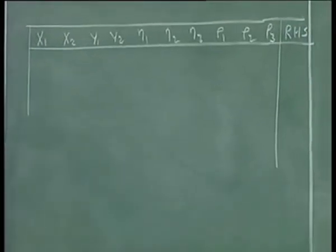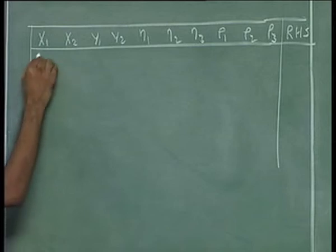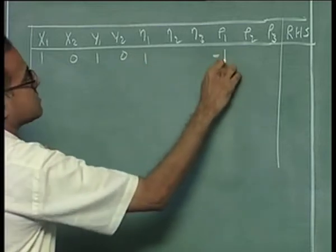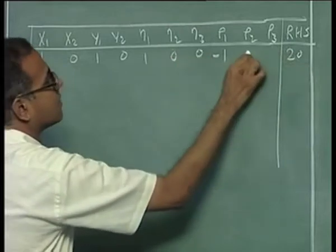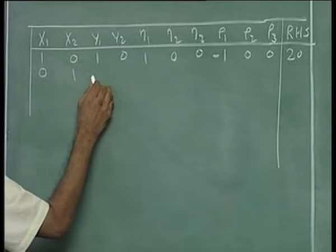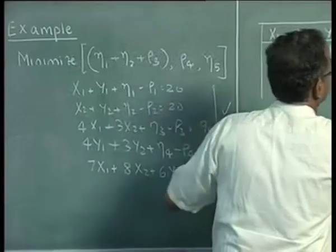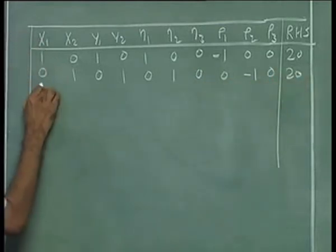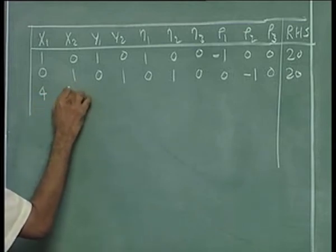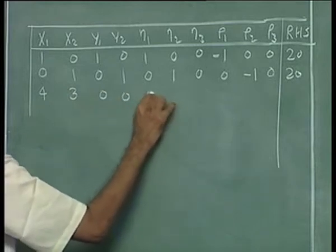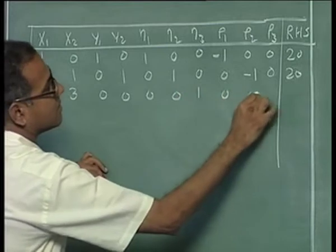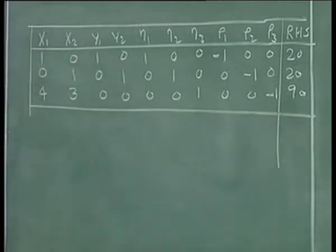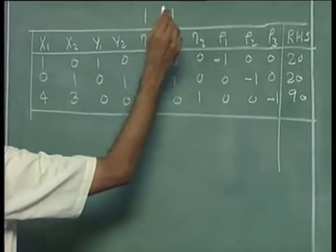We can start the simplex table this way, when we write x1 plus y1 plus eta1 minus rho1 equal to 20, x2 plus y2 plus eta2 minus rho2 equal to 20, 4x1 plus 3x2 plus eta3 minus rho3 equal to 90. We want to minimize eta1 plus eta2 plus rho3.